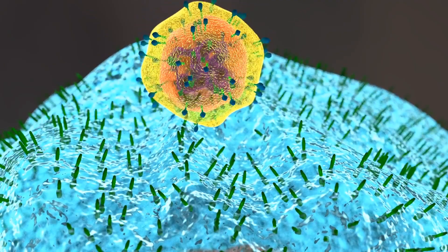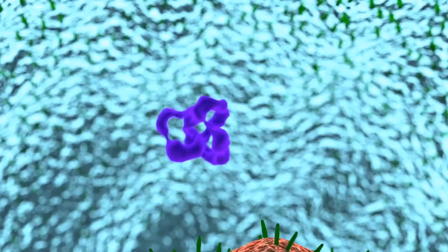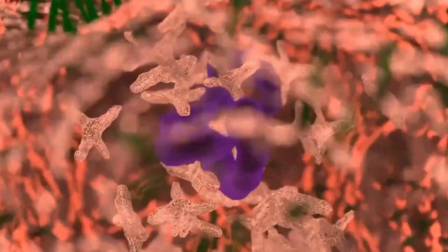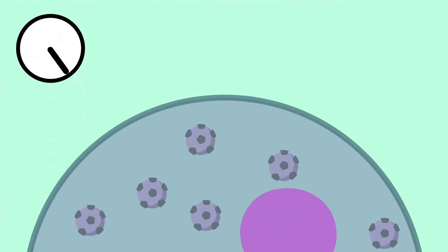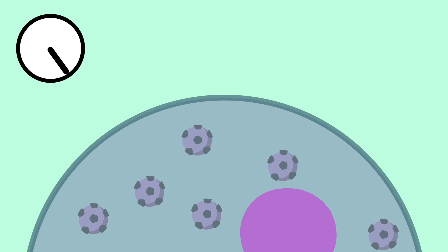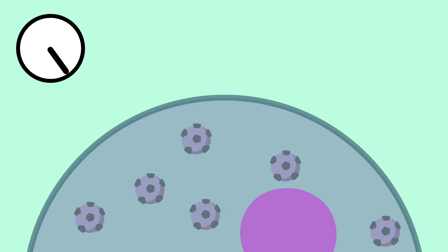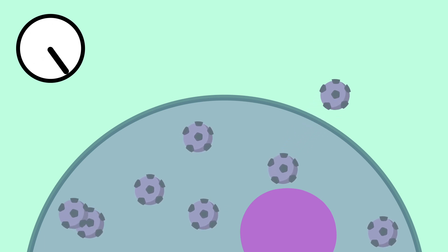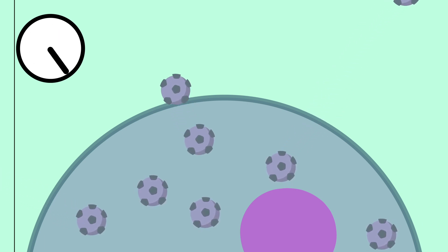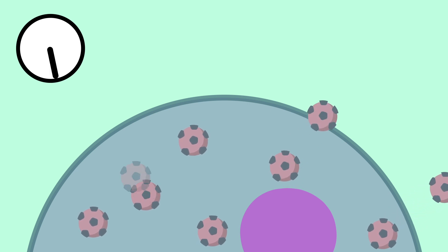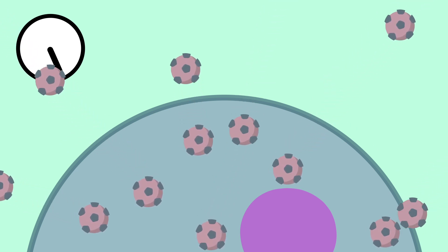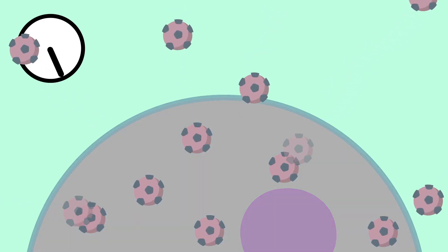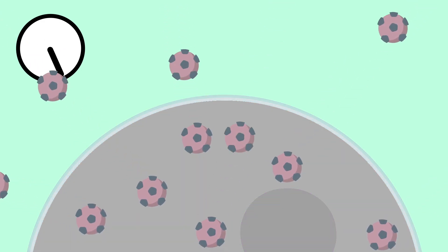Once a virus finds a suitable cell, it injects its genetic material inside. And what happens then depends on the specific instructions contained within its genes. Some viruses go the slow and steady route — they either lie quietly doing nothing, waiting for the right moment, or they reproduce themselves slowly, using the cell's spare resources and causing little damage. But other viruses do things with a bit more flare, completely taking over and destroying the cell in an uncontrollable push to reproduce as quickly as possible.